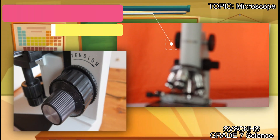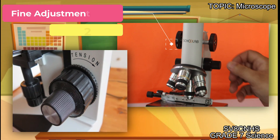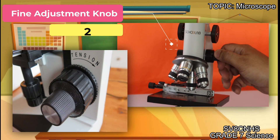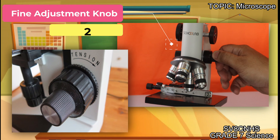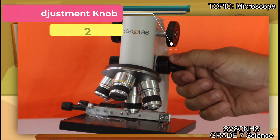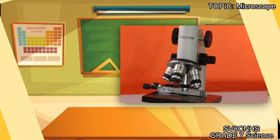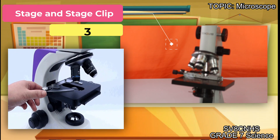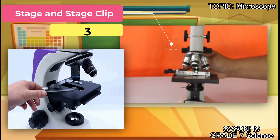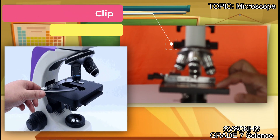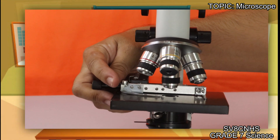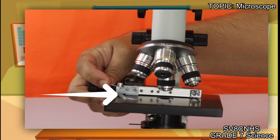What is the function of the fine adjustment knob? Our fine adjustment knob moves the body tube for focusing with a high-power objective lens. Next part is our stage and our stage clip. Here is what we call the stage. On the other hand, this particular part is what we call the stage clip.